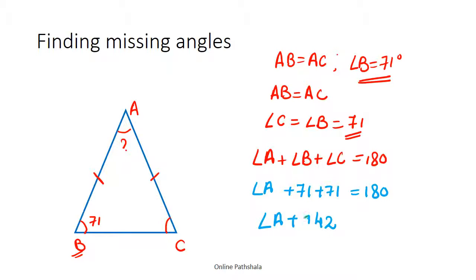We just added them together. So something added to 142 will give me 180. So I just subtract 142 from 180. So that gives us 38. That is 180 minus 142 gives me 38.